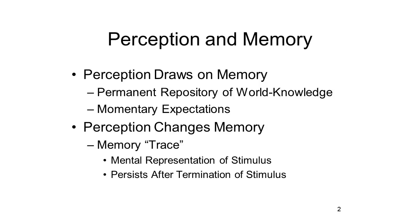In the last lecture, we saw one of the ways in which perception is related to memory, which is that in the act of perception, the perceiver draws on information stored in memory. Perception doesn't just extract information from the stimulus. Perception, as the active construction of a mental representation of the environment, as a problem to be solved by the perceiver, draws on the perceiver's permanent repository of world knowledge stored in memory.